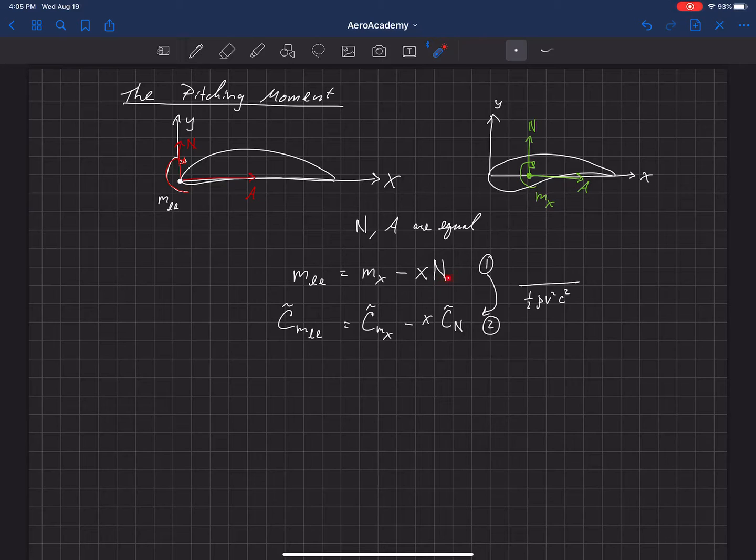Well, when we non-dimensionalize the force coefficient here, that only uses one-half rho V squared times C. Because, remember, that's how we non-dimensionalize it in the previous video. But not C squared. So we still have an extra C here that needs to be divided down here.